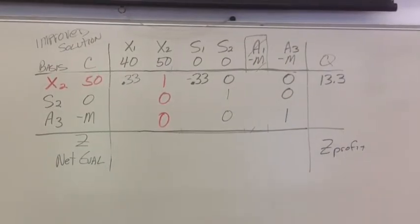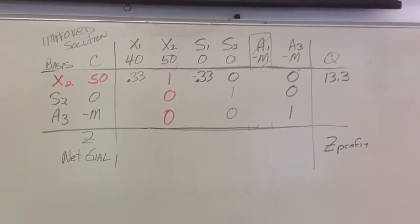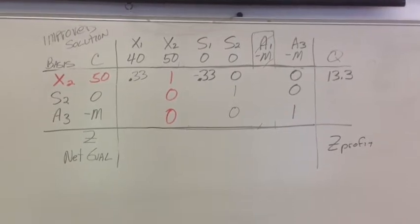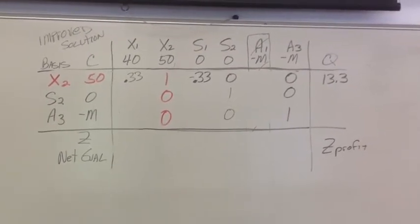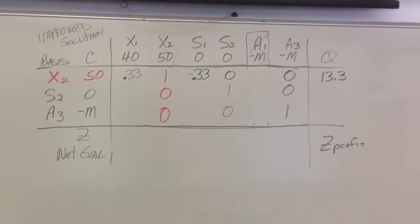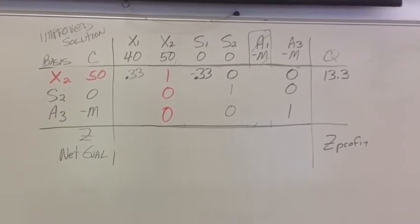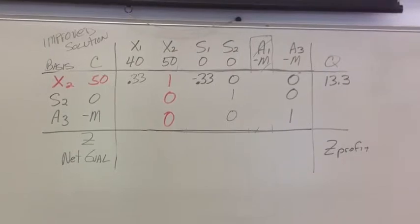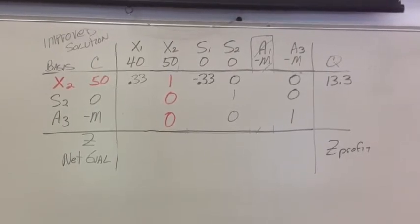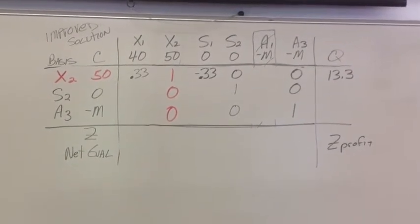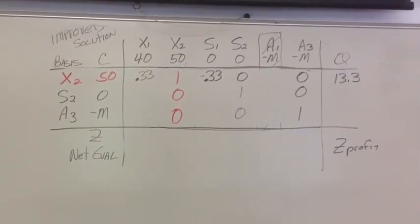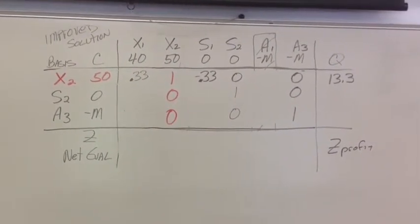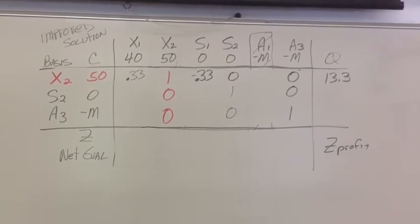Okay, now what I've done is I've gone in and put our entering variable x2 into a new tableau. I labeled it improve solution, so that just helps me keep track of which one is which. Notice I'm no longer tracking my a1 variable, artificial variable. Again, the subrates are just the old a1 subrates divided by 3.